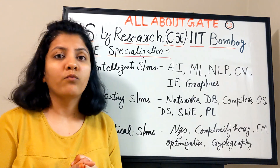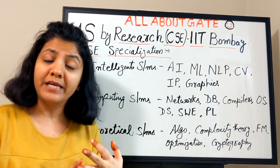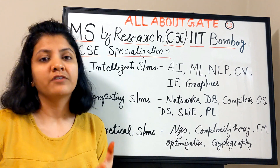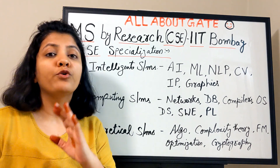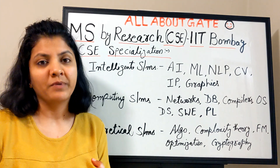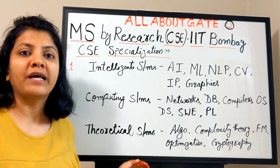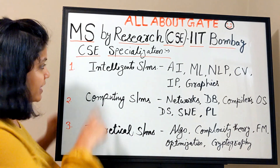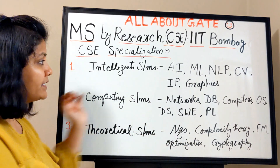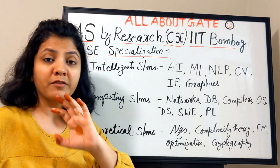Now let's look at the CSE specializations. There are three questions to answer: what are the CSE specializations for the MS program, what does it actually mean to have a specialization, and when and how do you select one? The three specializations available are: Intelligent Systems, Computing Systems, and Theoretical Systems.